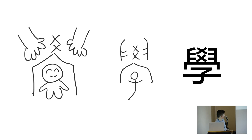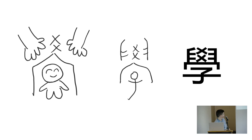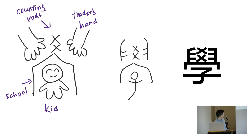Once the child grows up, it's not just a house anymore — it's a school. You can see two hands here placing something — counting rods. That's how Chinese people 3,000 years ago learned to count mathematically. The two hands belong to the teacher, who is showing the child how to count. This character means 'to teach' and 'to learn.' In the traditional script you can see the counting rods, the teacher's hands, and the child with the big head. That's why I think traditional script is better than simplified.